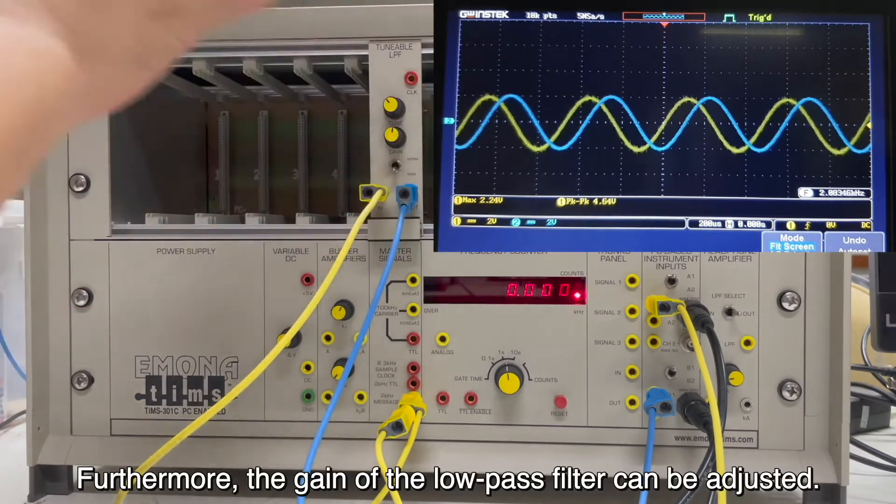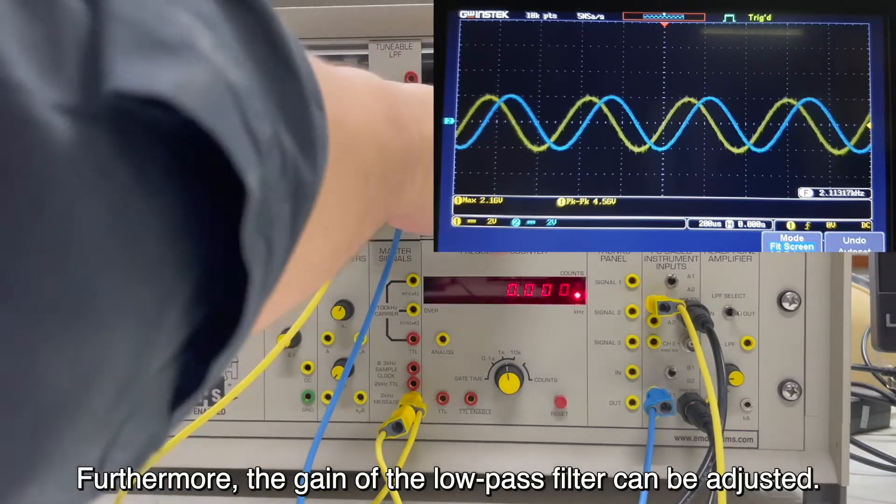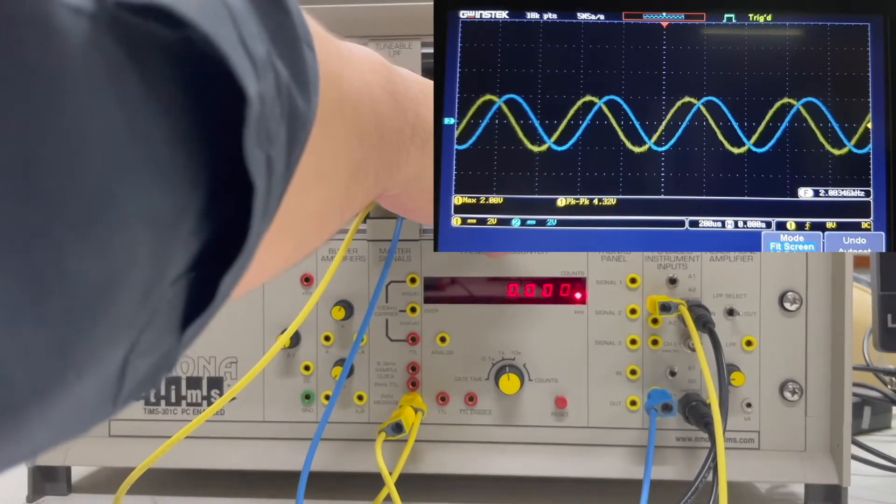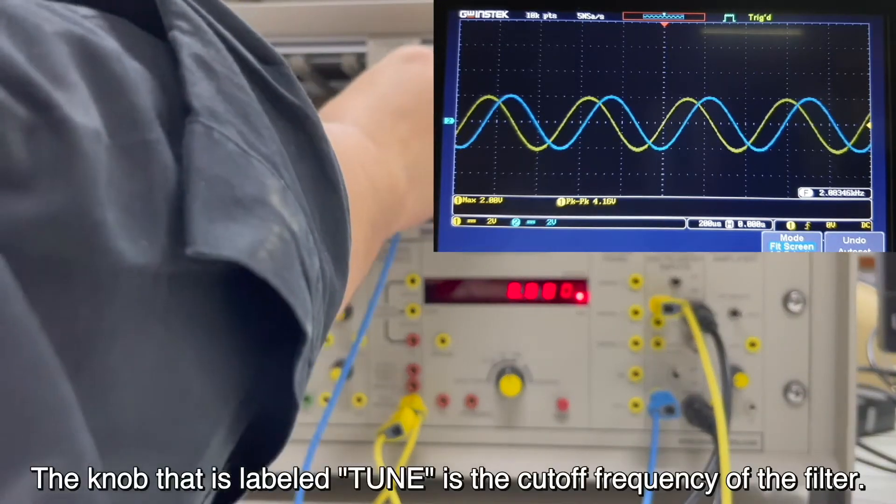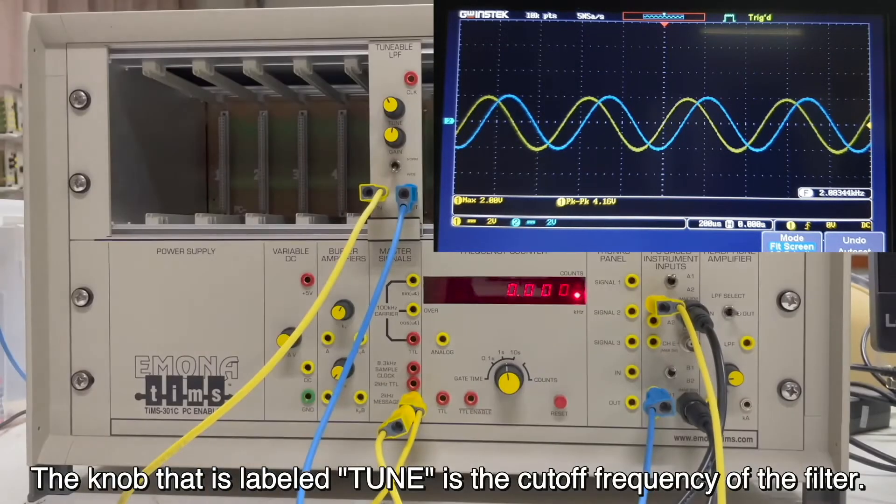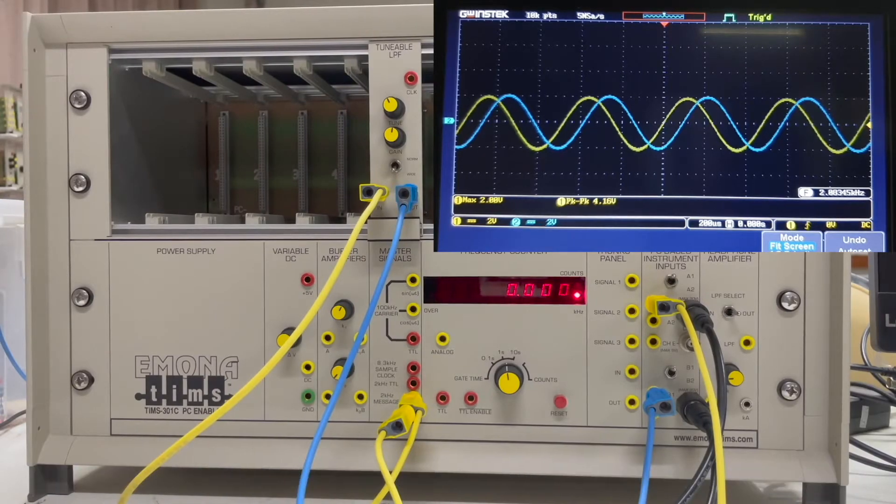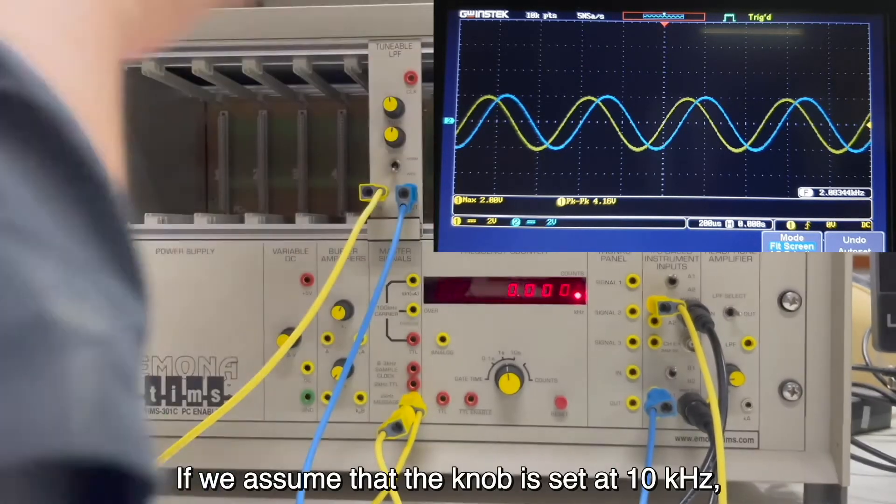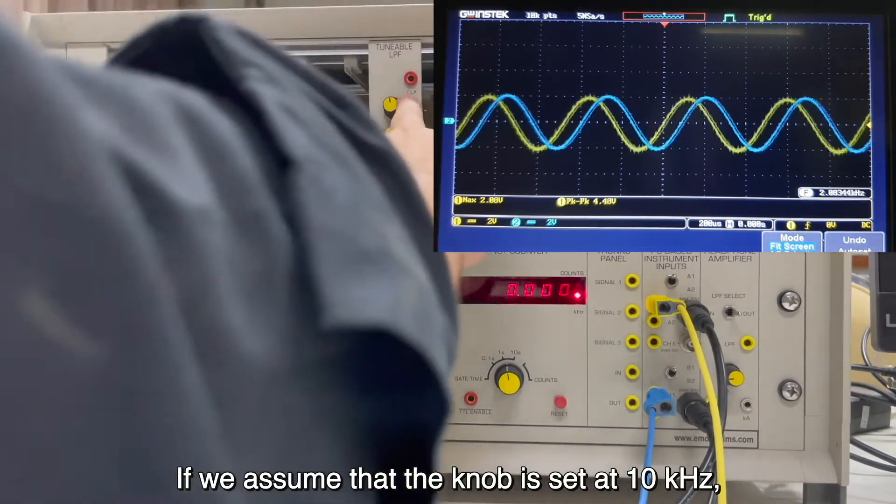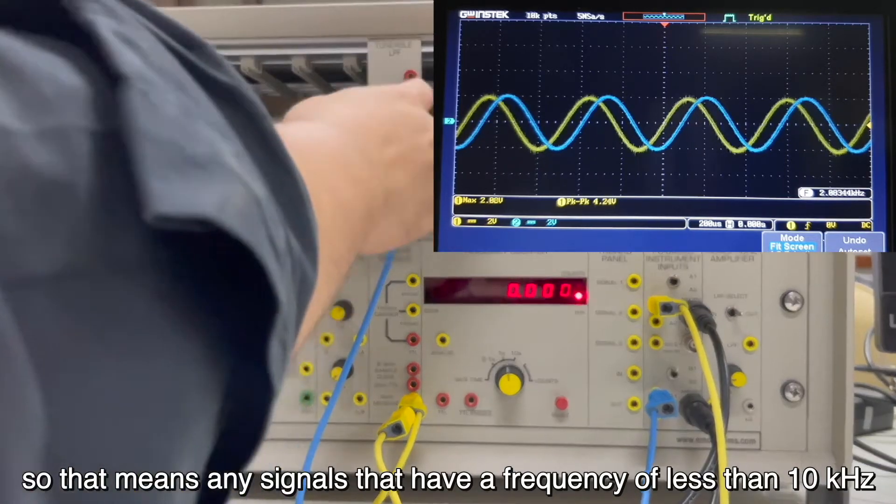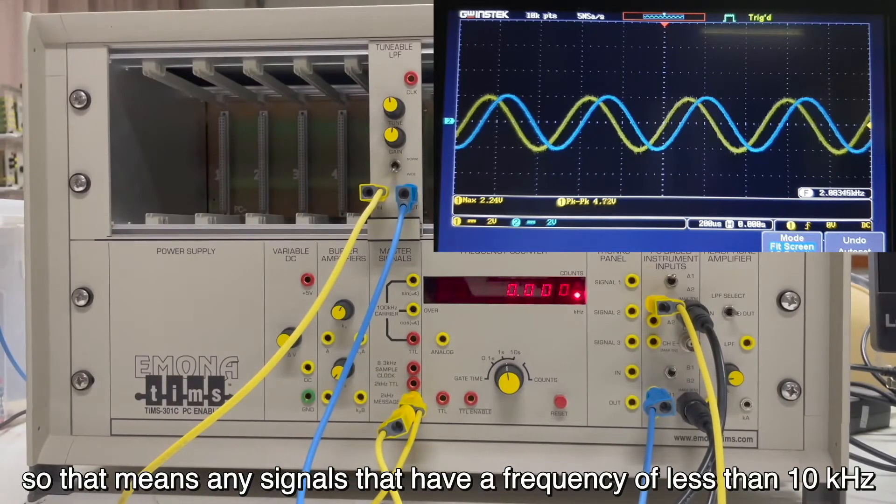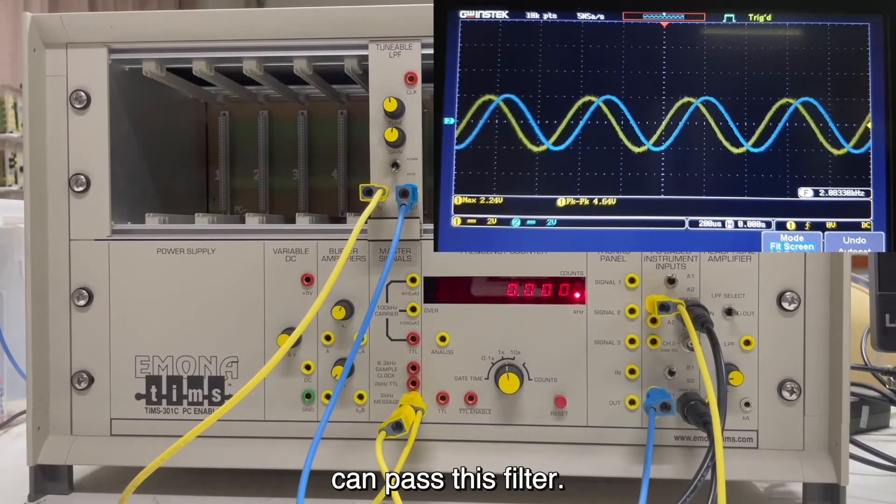Furthermore, the gain of the low-pass filter can be adjusted. The knob that is labeled tuned is the cutoff frequency of the filter. If we assume that the knob is set at 10 kHz, so that means any signals that have a frequency of less than 10 kHz can pass this filter.